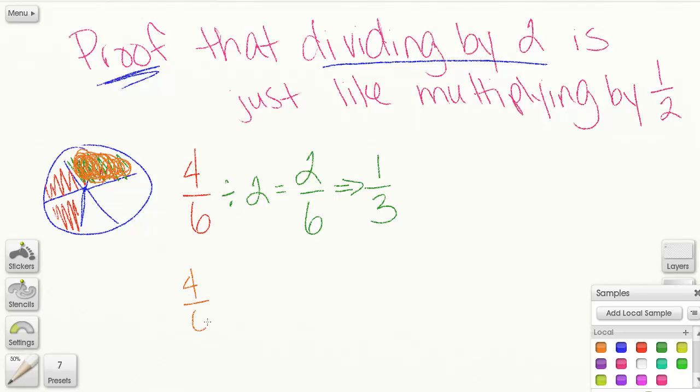So four sixths times, because I change - I keep, change, flip. Don't forget, two is over an invisible one, so this becomes one half.